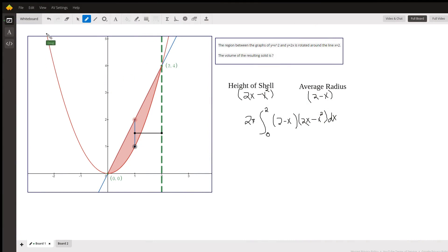Okay, you've got the parabola y equals x squared, which is this red curve. You've got the line y equals 2x, which is this straight line right here, and you want to revolve the region created by revolving this red region around the line x equals 2.